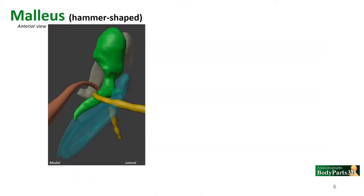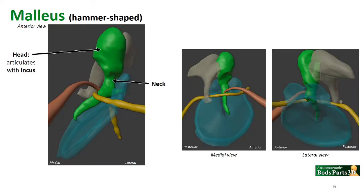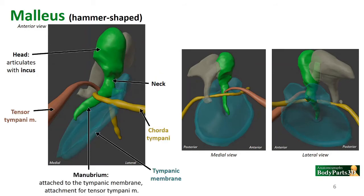So let's start with our malleus. This is a hammer shape. The hammer portion is the head, and the head is what articulates with the incus. Below the head is a narrowing, and anytime you have a head with a narrowing, that structure is called the neck. The manubrium is the handle — the portion that is pushed up or articulating directly with that tympanic membrane. The manubrium also serves as the attachment point for the tensor tympani muscle, which can slow the vibrations of the malleus and the tympanic membrane. This is also where the chorda tympani passes over the malleus at the manubrium.